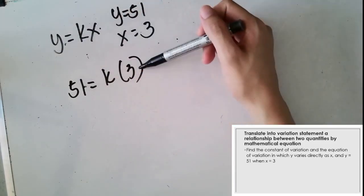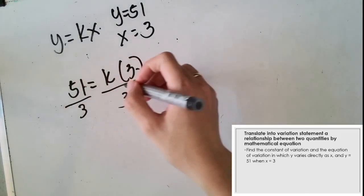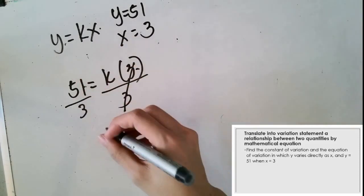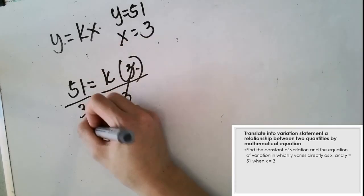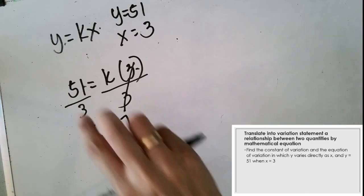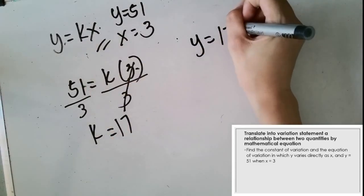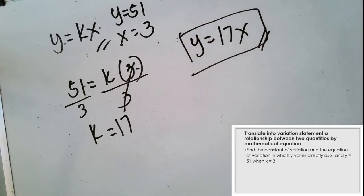We changed y into 51 and x into 3. So the question is: what number multiplied by 3 gives us 51? Another way, we divide both sides by 3 to isolate k, and k equals 17, because 51 divided by 3 is 17. We already answered the first part — the constant, the value of k. For the equation, we take y equals kx and substitute k as 17, giving us y equals 17x. This is the equation of the given problem.